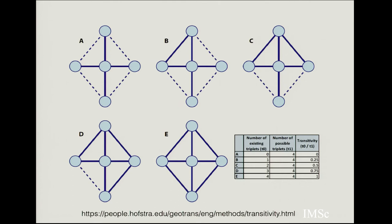Transitivity is the overall probability for the network to have adjacent nodes that are interconnected. This property reveals the existence of tightly connected communities, clusters, or cliques. A numerical measure is the ratio between the observed number of closed triplets and the maximum number of triplets allowable on that graph. You can use the words transitivity and clustering somewhat interchangeably. For a fully disconnected star, transitivity is 0 divided by 4 equals 0. Adding one triangle gives 1 divided by 4 equals 0.25, and a fully connected graph gives 4 divided by 4 equals 1.